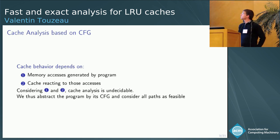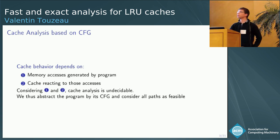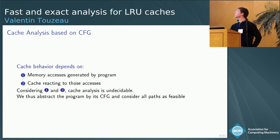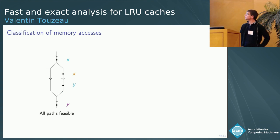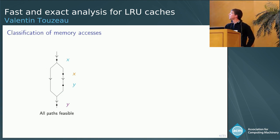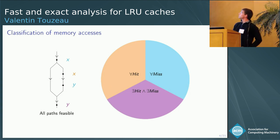What we would like to do is classify accesses into those that lead to a hit and those that lead to a miss. The problem is that this is undecidable in general, so we have to perform some abstraction to make the problem tractable. What is usually done in cache analysis is to abstract the program into its control flow graph decorated with accesses. Our goal is to classify every access into one of three categories: always a miss (like the first access to X from an empty cache), always a hit, or possibly either, depending on the execution path.